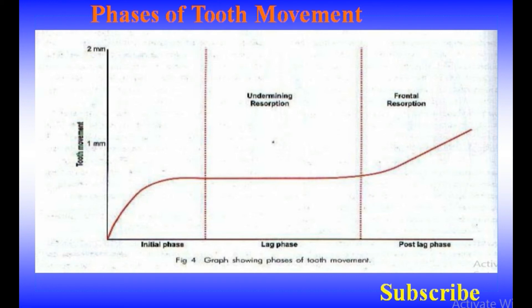After the lag phase, tooth movement progresses rapidly as the hyalinized zone is removed and bone undergoes resorption. During this post-lag phase, osteoclasts are found over a large area, resulting in the direct resorption of the bony surface facing the periodontal ligament.